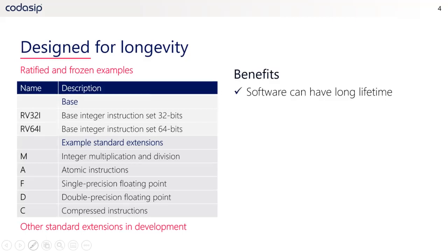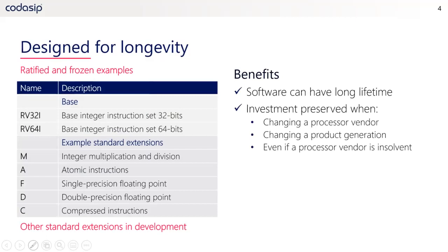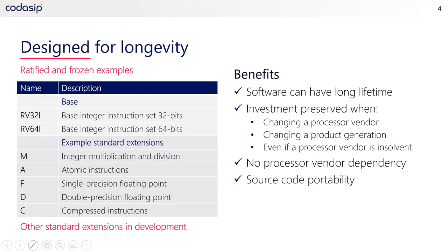What are the benefits? One is software can have a very long lifetime — you can literally plan for decades of use. Your investment is preserved even if you change your processor vendor or change a product generation. Even in the bad case of a processor vendor going insolvent, your investment should be preserved, so you have no dependency on your processor vendor. Instead, you have source code portability and binary portability for the same combination of extensions.